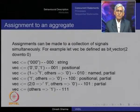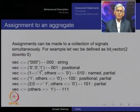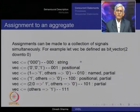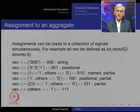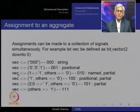We can also give a comma-separated list. For example, assign to vec: 0, 0, 1 — in that case, bit 2 gets 0, bit 1 gets 0, and bit 0 gets 1. Remember, bit_vector is defined as 2 down to 0. These are positionally assigned, so this is called a positional assignment. We can also assign by name — for example, say to index 1 give the value '1' and to 'others' the value 0.